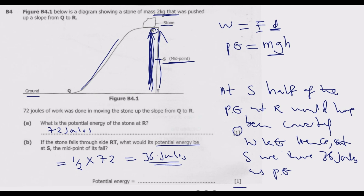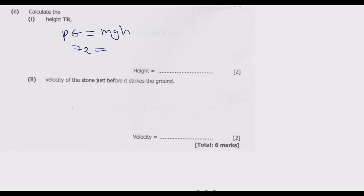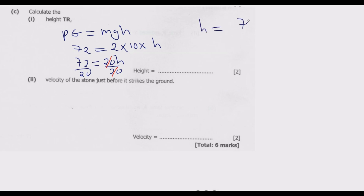Gravity is 10 newtons per kg. So we have: 72 = 2 × 10 × h, which gives 72 = 20h. Dividing both sides by 20, h = 72 ÷ 20 = 3.6 meters. So 3.6 meters is the height TR. Once you do this, you are good to go and get these two marks.